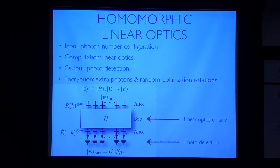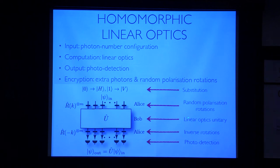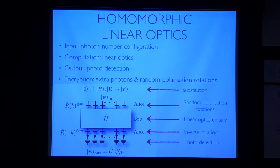So if he were to try and intercept and measure those photons, he wouldn't know what polarization basis to measure in, and so he wouldn't know which ones were meant to be associated with zero and which ones were meant to be associated with one. So that's the basis for this encryption. I'll point out, this is not perfect encryption—it's not perfectly information-theoretically secure—but it's probably the simplest example of how you can go about doing this. Okay, so here's the procedure: substitution, random polarization rotations, linear optics unitary, inverse rotations, photo detection, and then Alice gets the output state.